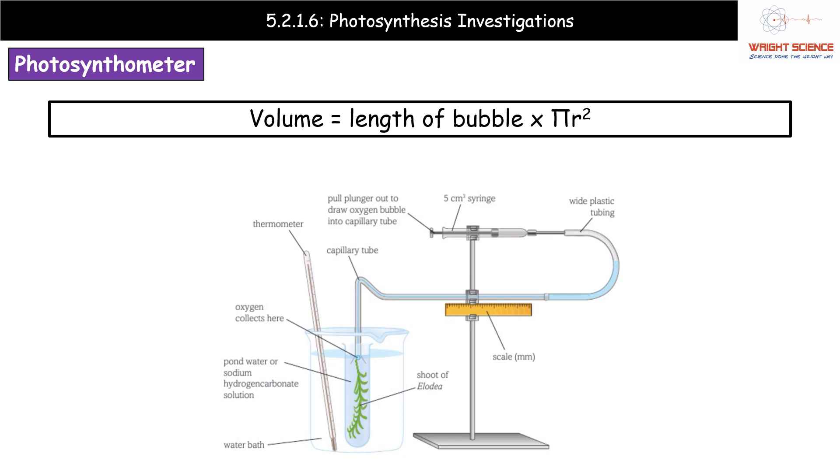If we look at the diagram, we've got our standard bit of pondweed and we've got a little tiny funnel collected over the top, which is usually just the end of a capillary tube. A capillary tube is a very thin glass tube with an even smaller tube running down the middle. We then have a scale, which is pretty much a ruler, and we've got a syringe on the other end of our tube.